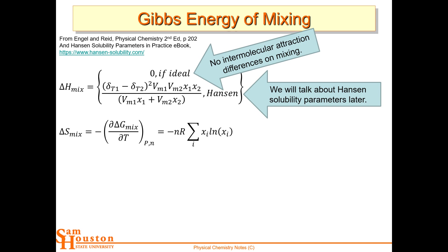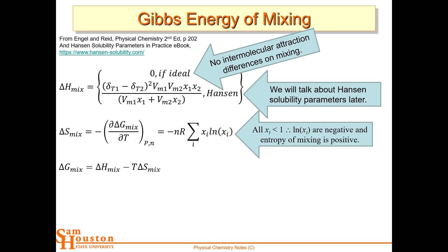If you think about the change in Gibbs energy with respect to temperature — looking at the equation — H is by itself, so there's no change in Gibbs energy with respect to temperature using H. But there is for S. The derivative of the Gibbs energy of mixing with respect to temperature is just minus delta S. The entropy of mixing is minus NR times the sum of all mole fractions. This equation drops out of the sky in our notes, but you can look up the derivation in the book. All of these mole fractions are less than one, because it's moles of substance i divided by total moles.